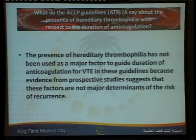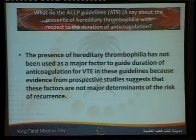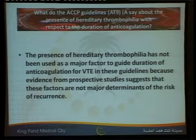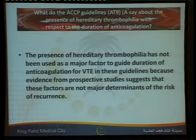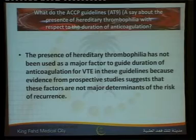Regarding ACCP guidelines, the presence of hereditary thrombophilia — specifically the common ones like factor V Leiden and prothrombin mutation — has not been used as a major factor to guide duration of anticoagulation for VTE in these guidelines, because evidence from prospective studies and meta-analyses suggests these factors are not major determinants of recurrence risk.